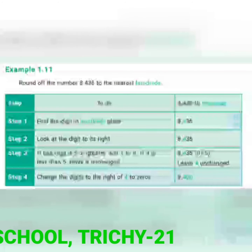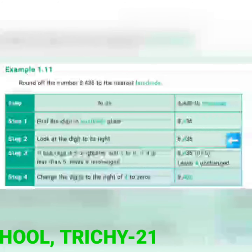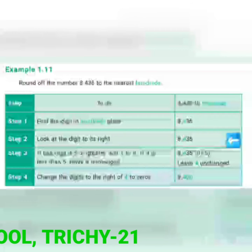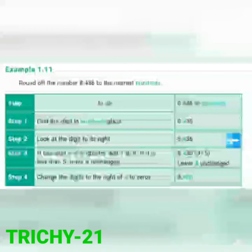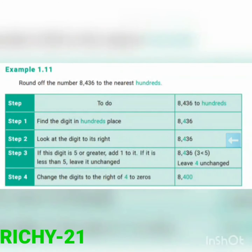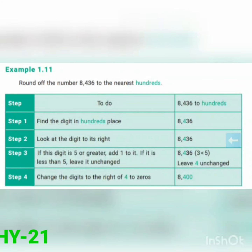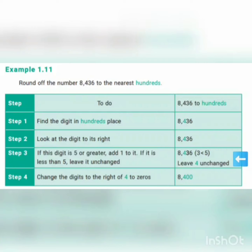Step two: look at the digit to its right. The hundreds place is 4; to the right of 4 is the tens place, which is 3. Step three: if this digit is 5 or greater, add one to it. If it is less than 5, leave it as it is — no need to change anything.